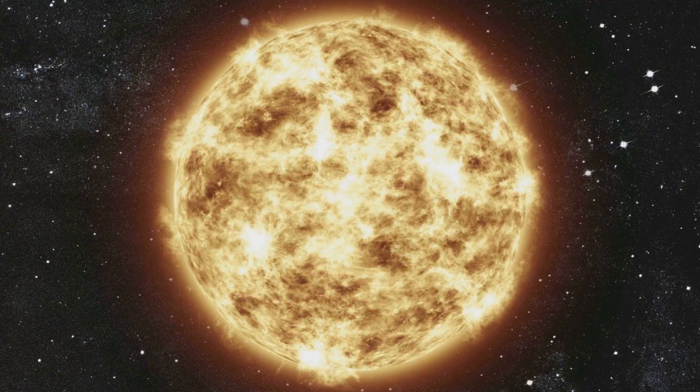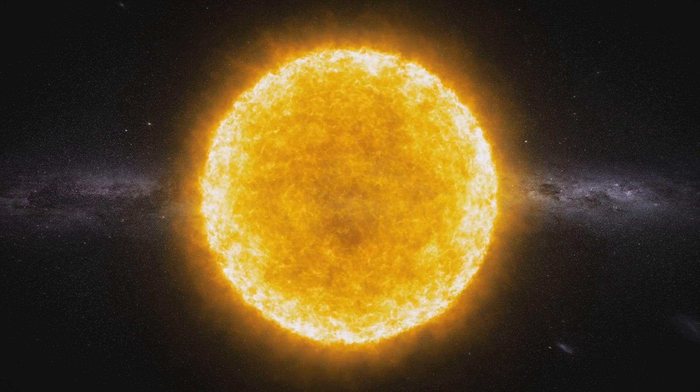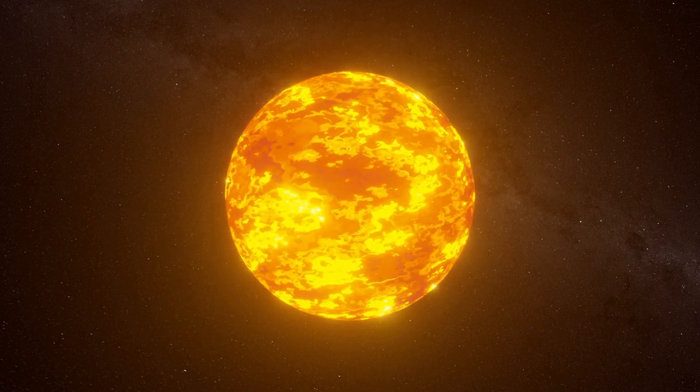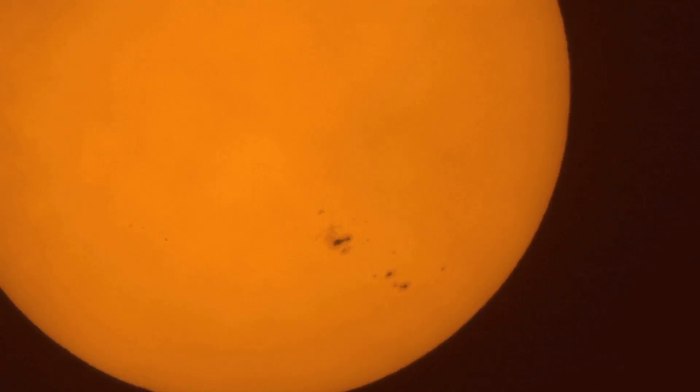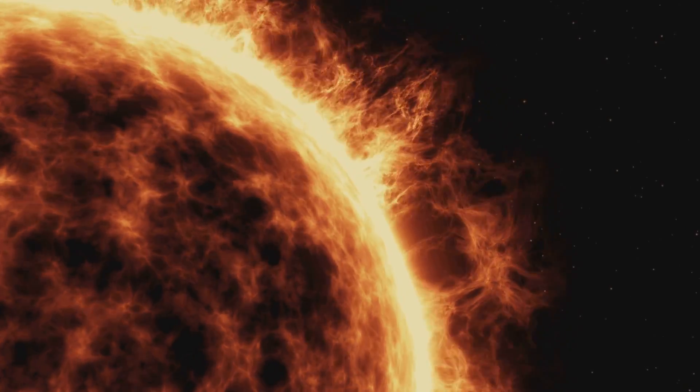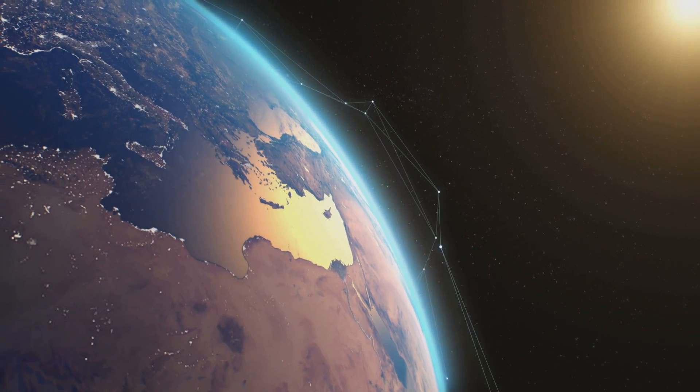For the next 5 billion years, the sun will continue this way, growing ever brighter. Eventually, its hydrogen will run out, and it will transform into a red giant. But for now, the slow warming is just the first step on a long journey. The sun's evolution is inevitable, and it shapes the fate of our planet.